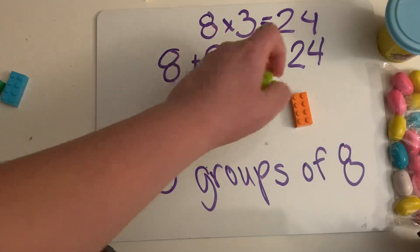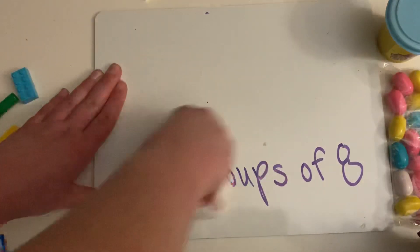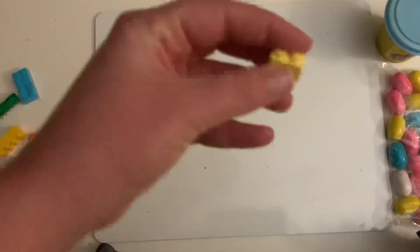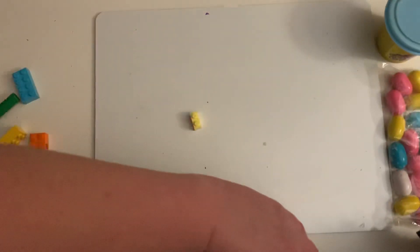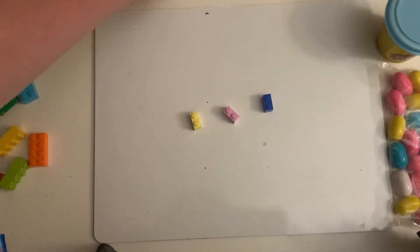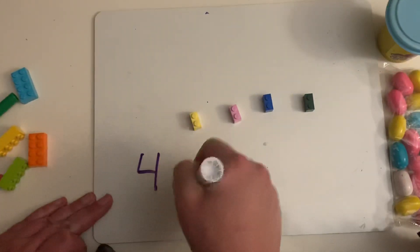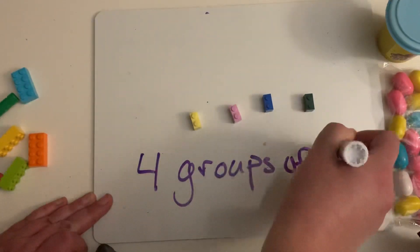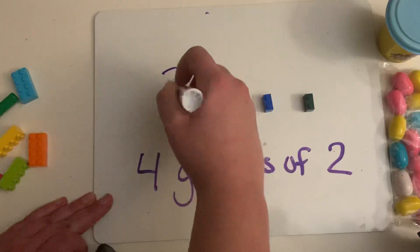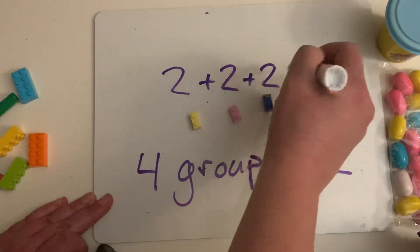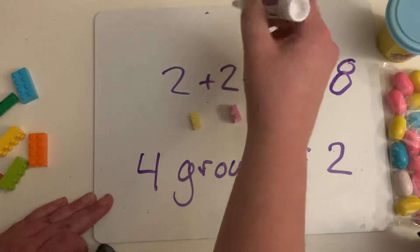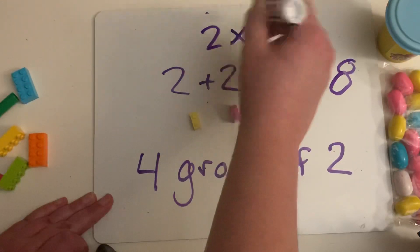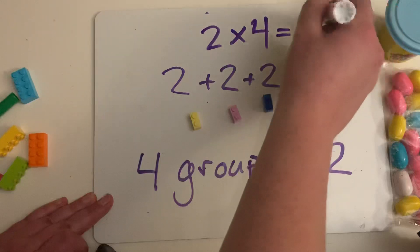You could use different types of Legos. For example, these Legos have only two circles. So if I have one, two, three, four, I have four groups of two, which equals two plus two plus two plus two, which equals eight. Or I could write it two times four equals eight.